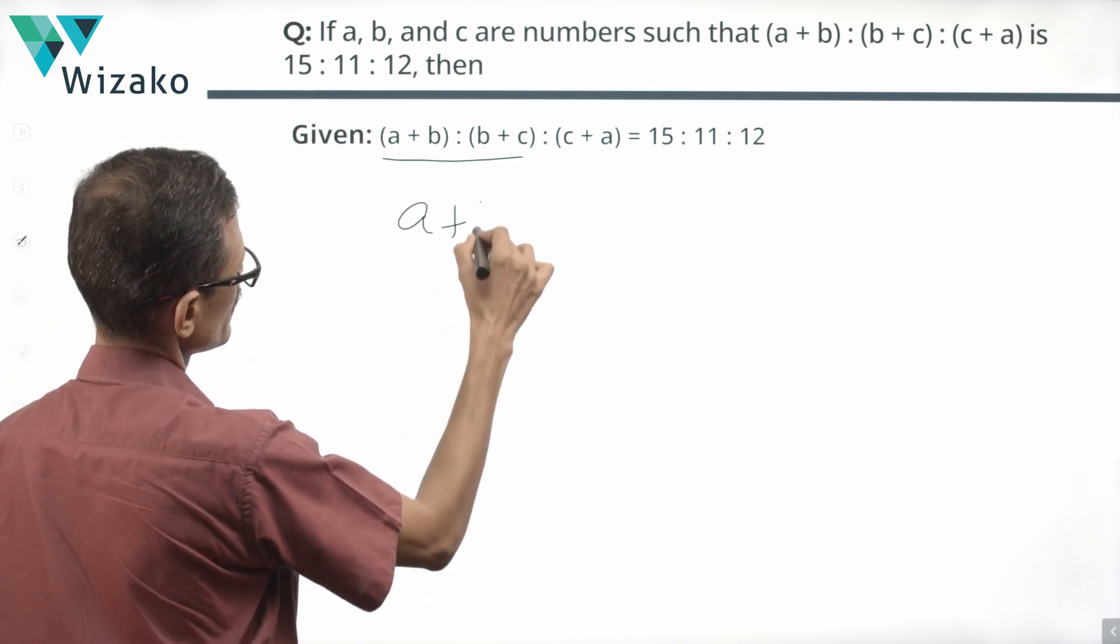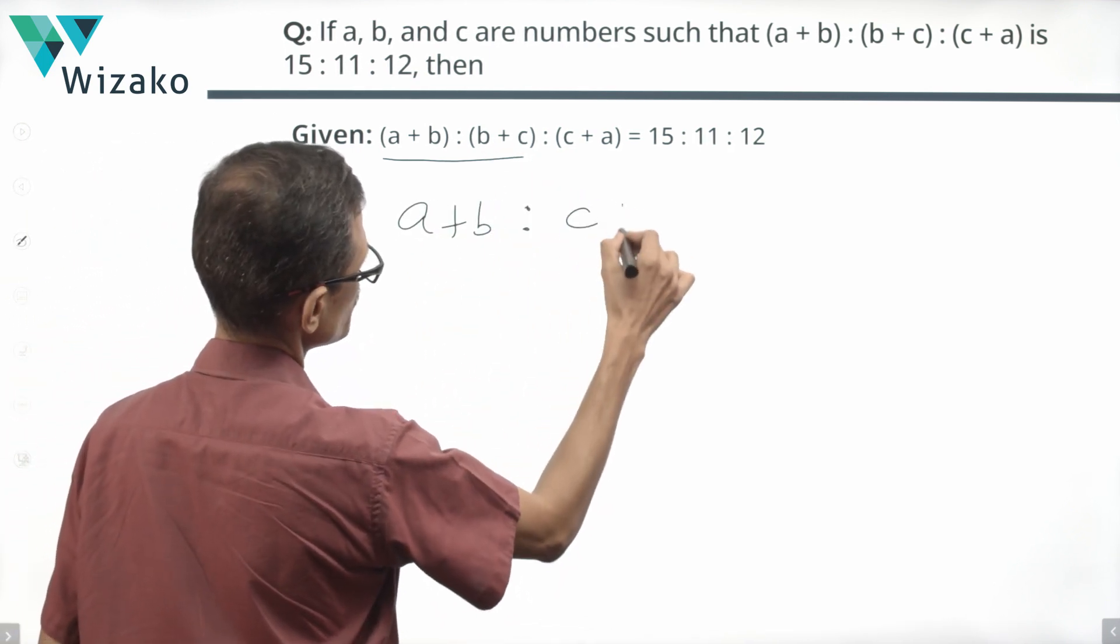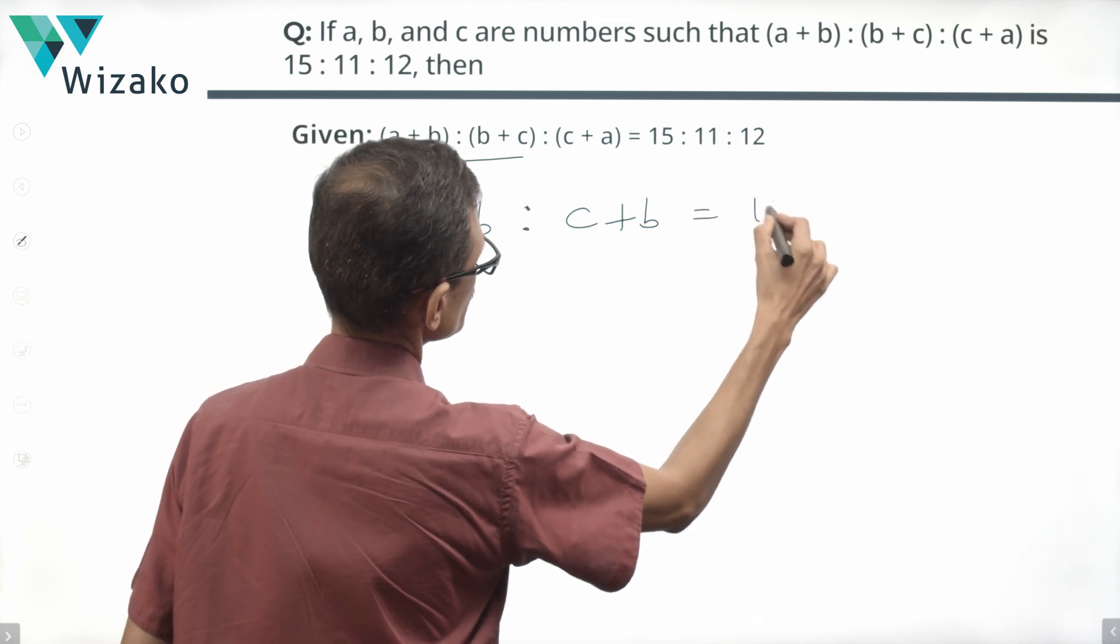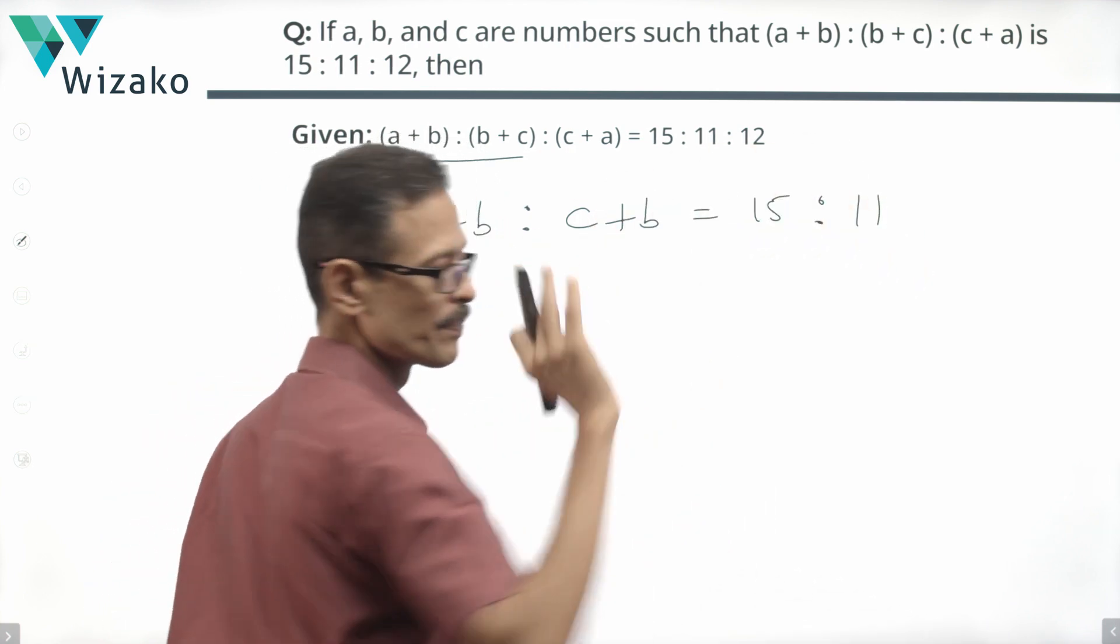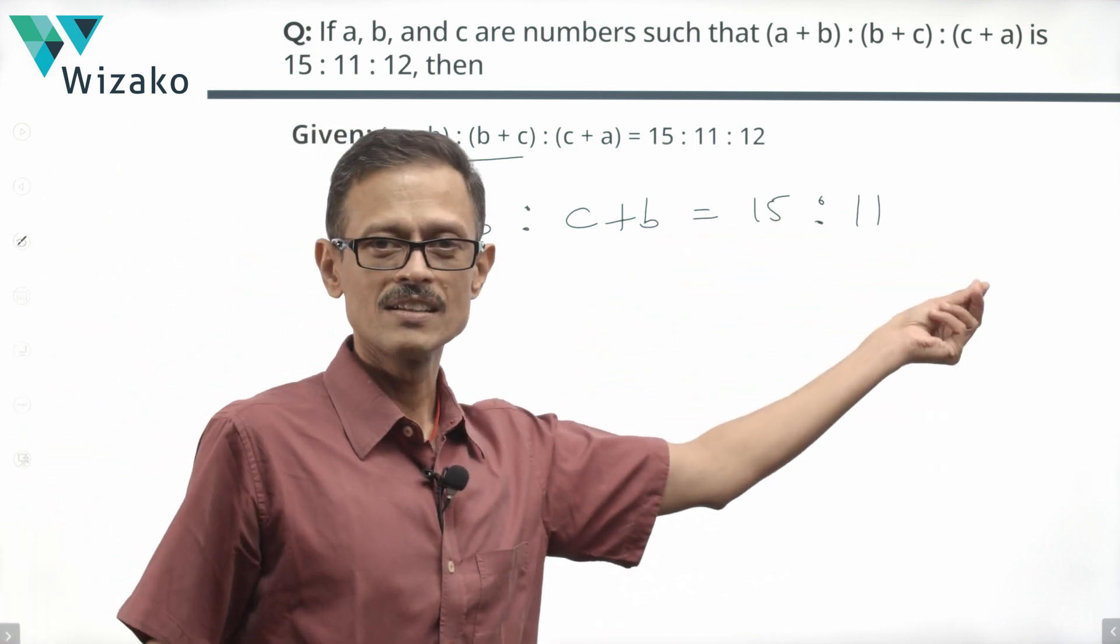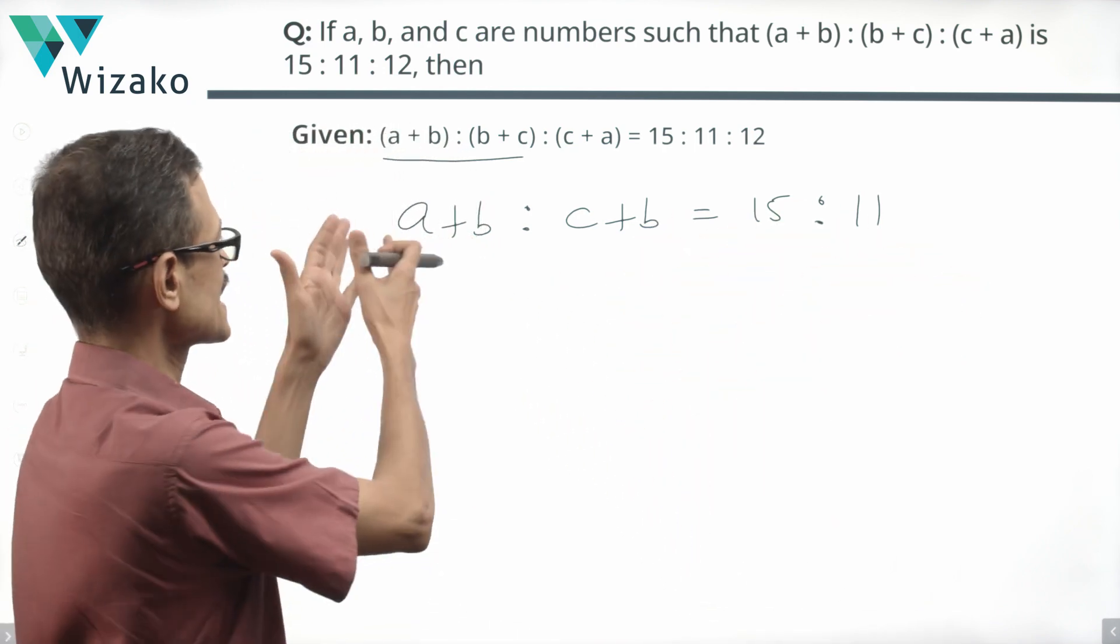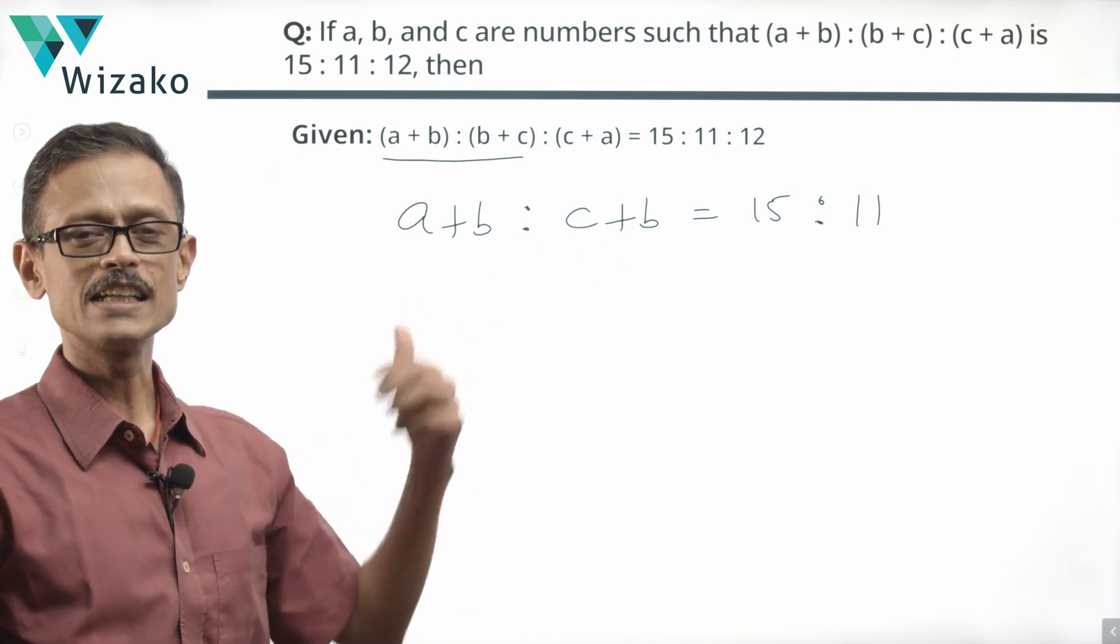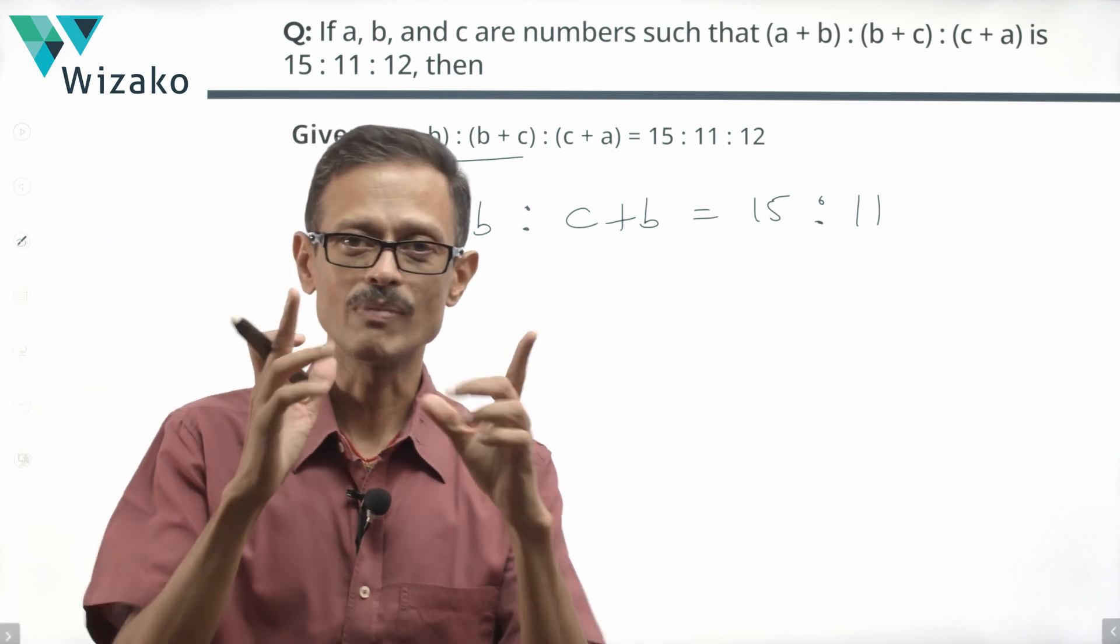So (a+b):(c+b) is equal to 15:11. B is common to both these parts. So the ratio is 15:11. Then obviously, a has a greater weightage in it than c in terms of magnitude.